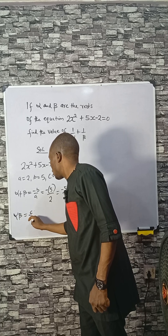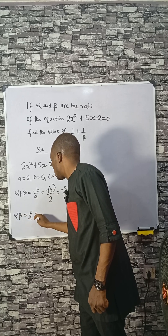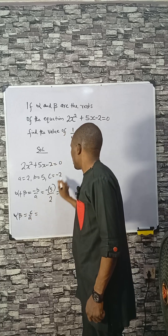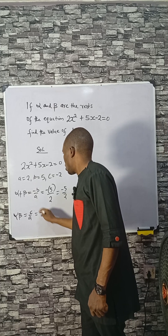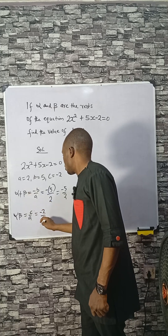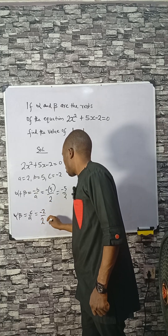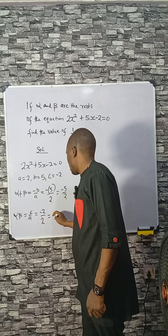The product of roots — when you multiply the roots — is given by c over a, where c is minus 2 and a is 2. That gives us minus 1.